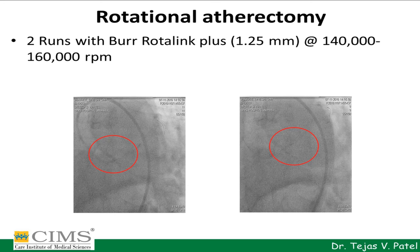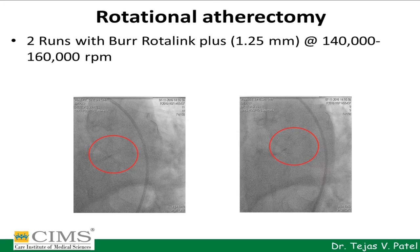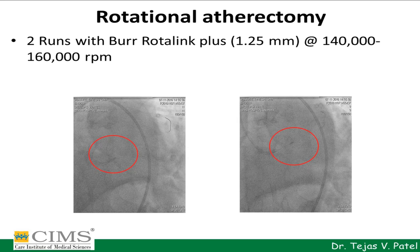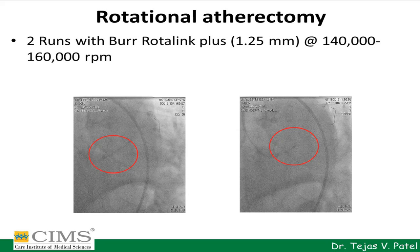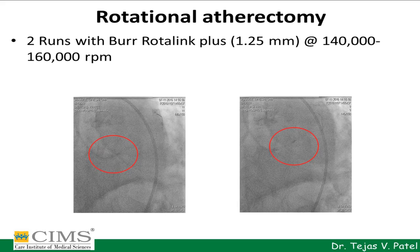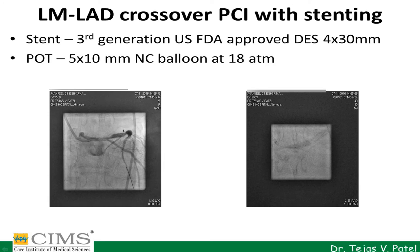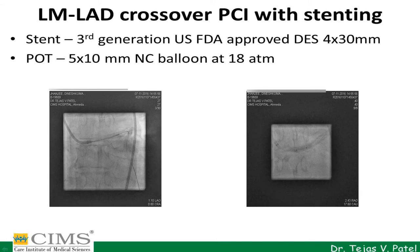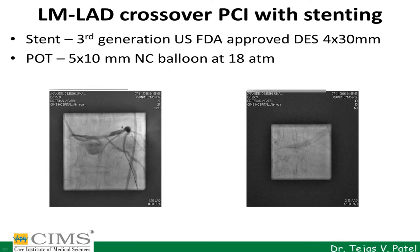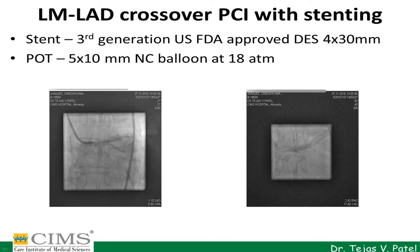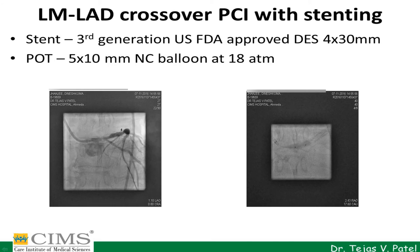This is the video showing use of the rotational atherectomy rota device. We used a Rotalink Plus with a burr size of 1.25 mm, which rotated at almost 140,000 to 160,000 rotations per minute. We did 2 runs of the rota as shown in the video. Subsequently, we did angioplasty by deploying a US FDA-approved drug-eluting stent of 4 x 30 mm. Following stenting, we performed proximal optimization technique (POT), which is used in bifurcation lesions, using an NC balloon of 5 x 10 mm, keeping the distal end of the balloon just at the origin of the circumflex artery, and inflating it at 18 atmospheres.